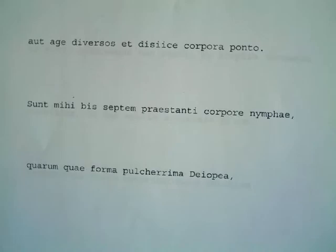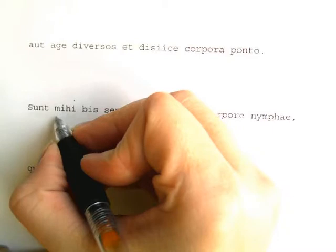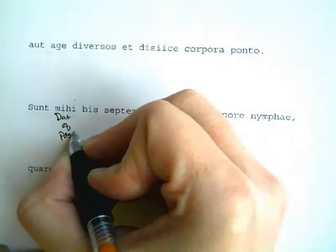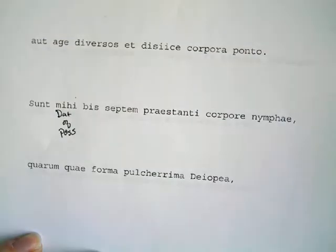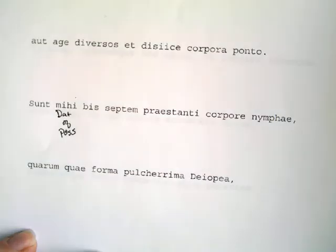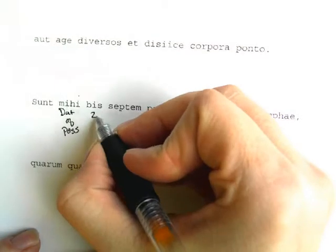We're at line 70: sunt mihi. This is a really important construction in Latin. You can always say 'there is' or 'there are' plus the dative case to mean 'I have' — it's called the dative of possession. Mihi is a dative of possession. If you said sunt tibi, 'there are for you,' that's the same as saying 'you have.' Sunt mihi is just another way of saying habeo, 'I have.' Bis means 'two times' or 'twice,' septem means 'seven.'